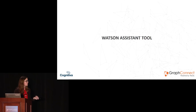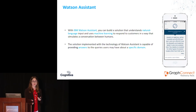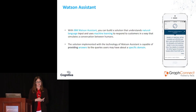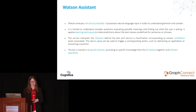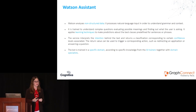With IBM Watson Assistant, you can build a solution that understands input in natural language and uses machine learning to respond to customers' questions in a way that simulates a conversation between humans. This type of solution is capable of providing answers to queries that users may have in a specific domain. Watson Assistant analyzes non-structured data, processes natural language to understand grammar and context, and we train the solution to understand complex questions and evaluate all possible meanings, finding out what the user is asking in each case.